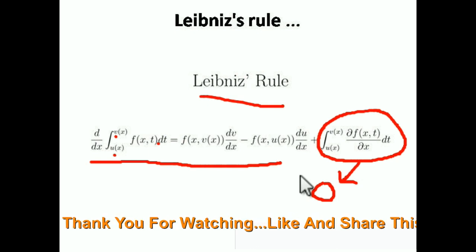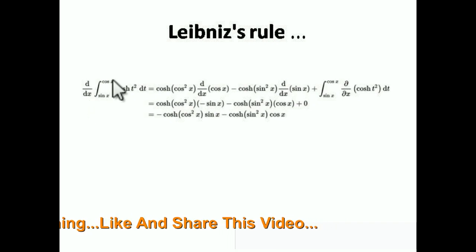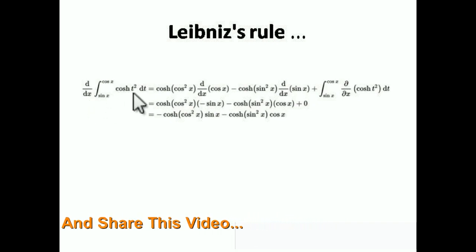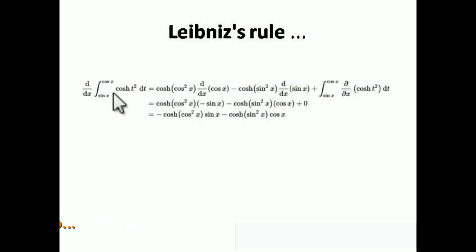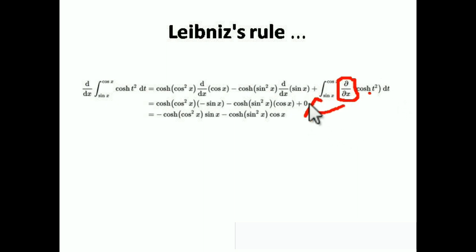Let me give you one or two examples. Example 1: find d/dx of ∫[sin x to cos x] cosh(t²) dt. Now applying the rule — upper limit in the function: t is the variable, so substitute the upper limit cos x in place of t: cosh(cos²x), multiplied by d/dx of the upper limit, which is cos x. Minus lower limit in the function: cosh(sin²x), multiplied by d/dx of the lower limit. Plus ∫[sin x to cos x] (∂/∂x) cosh(t²) dt — but since we differentiate with respect to x and t is constant, this becomes zero.